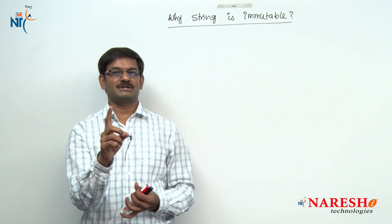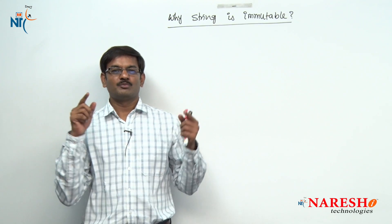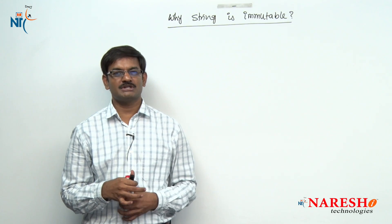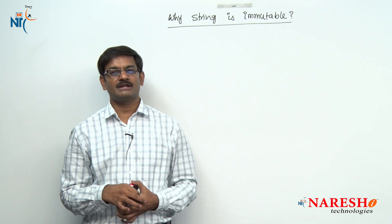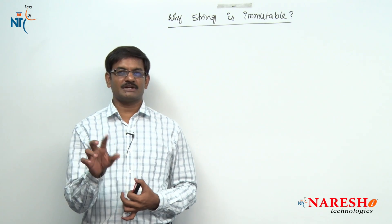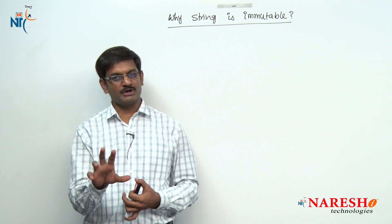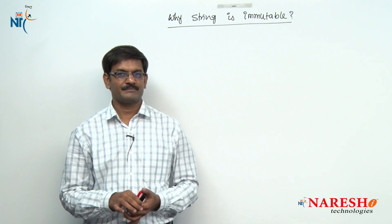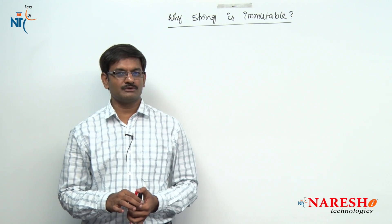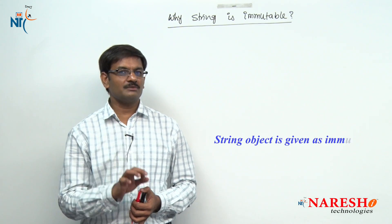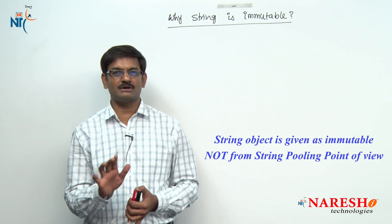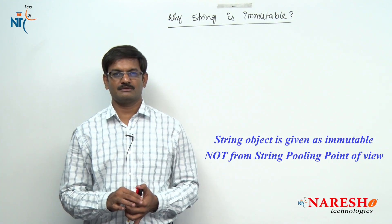only one object is created. Both variables point to the same object, and if you modify one object, another object gets affected — that is the point being told. Actually, from my point of view, string object is given as immutable not from the string pooling concept point of view.